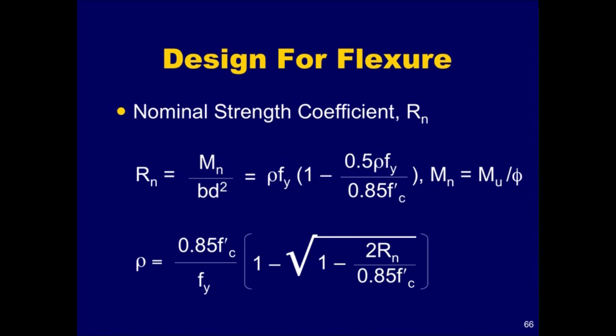Assuming that B and D are already known, the required reinforcement ratio rho can be determined by solving the quadratic equation for R sub n. Thus, for a given concrete section, the required area of tension reinforcement can be obtained from this equation for a given M sub u. A procedure to determine the cross-sectional dimensions B and D will be discussed shortly. This equation can also be used to determine the design strength of a section for a given area of reinforcing steel.